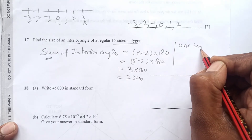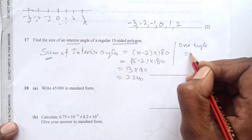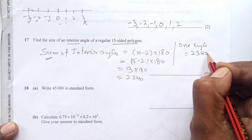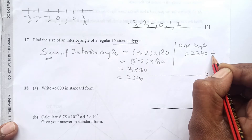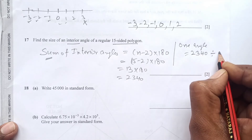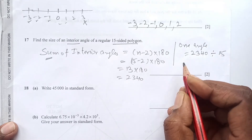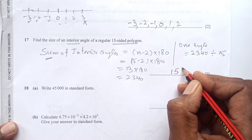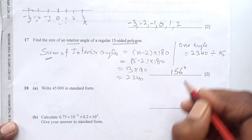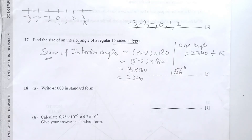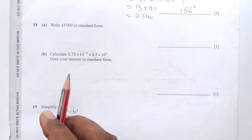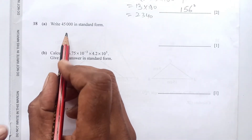To find one interior angle, divide 2340 by 15, which gives 156 degrees.